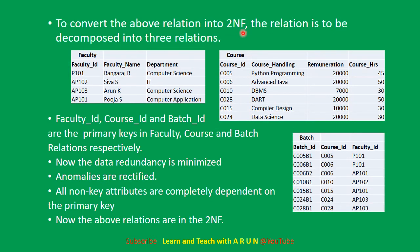To convert the above relation into the Second Normal Form, the relation needs to be decomposed into three relations. In the faculty table, the faculty ID is the primary key — it acts as the record identifier.